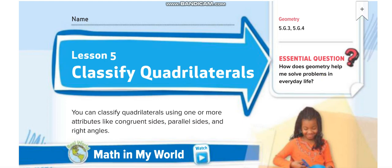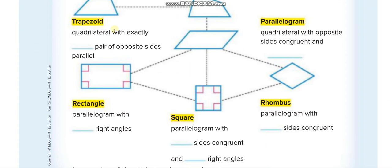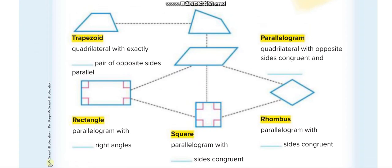Here we have five types of quadrilaterals. The first one is trapezoid, second is parallelogram, then rectangle, square, and rhombus. Let me show you each one according to their attributes.